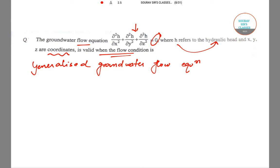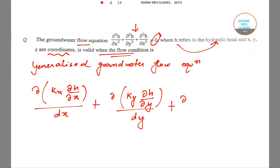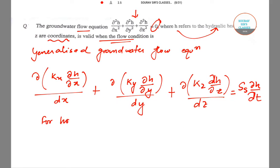The generalized groundwater flow equation is given by: del(kx * del h/del x)/del x plus del(ky * del h/del y)/del y plus del(kz * del h/del z)/del z equals Ss * del h/del t.